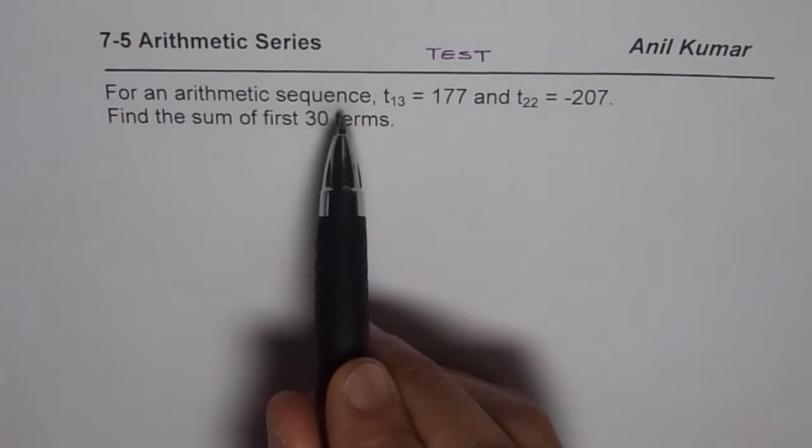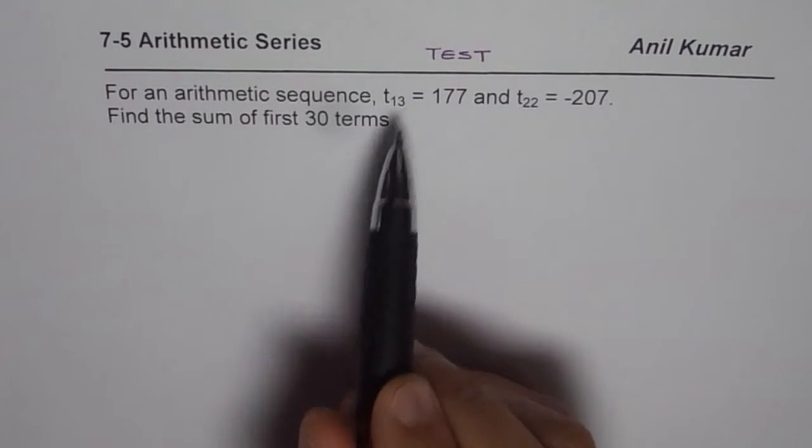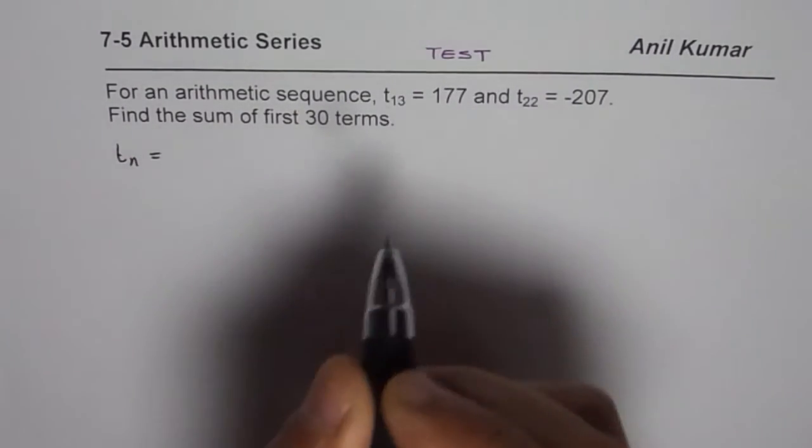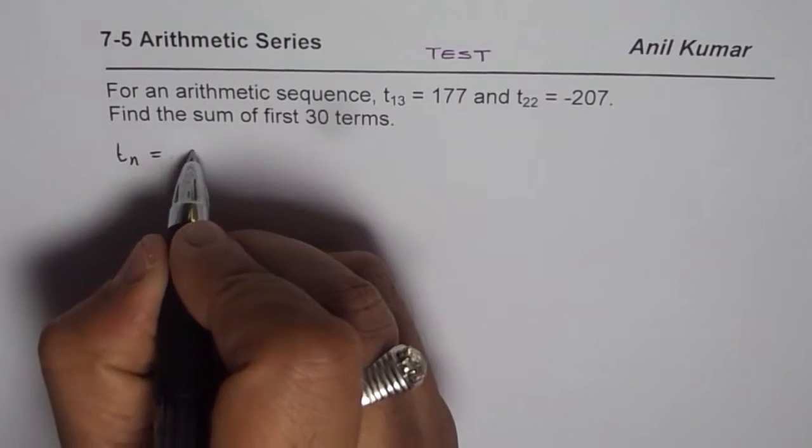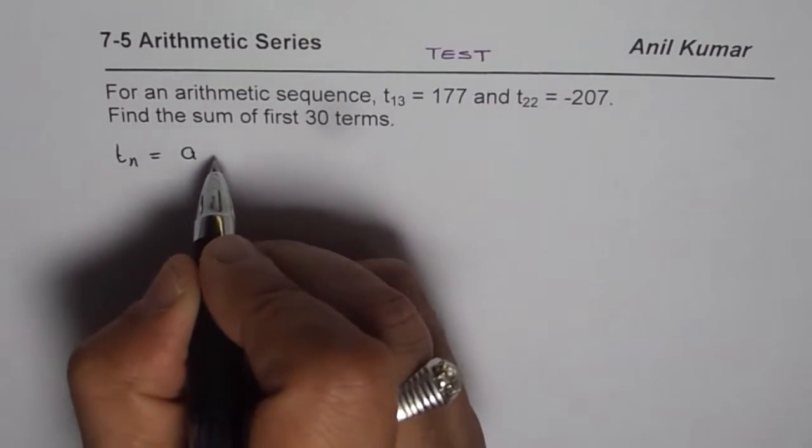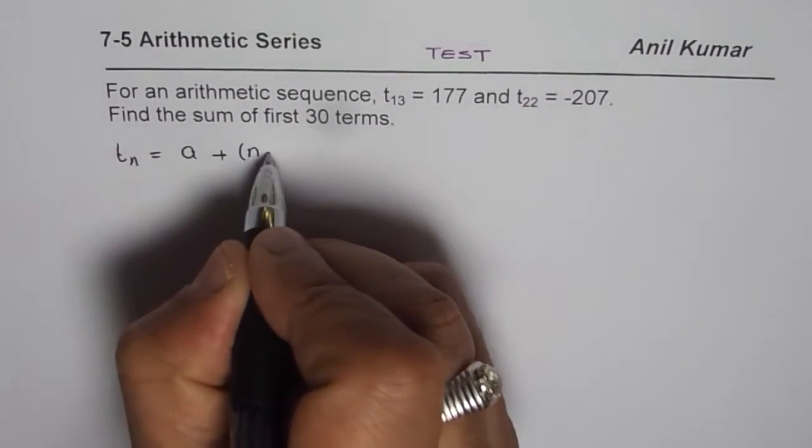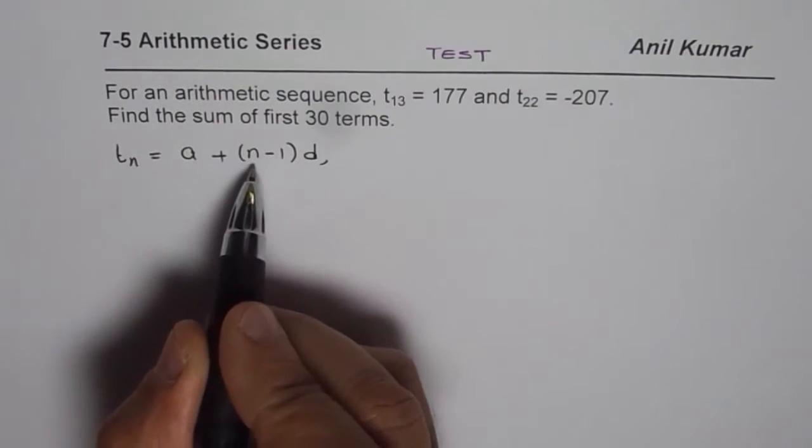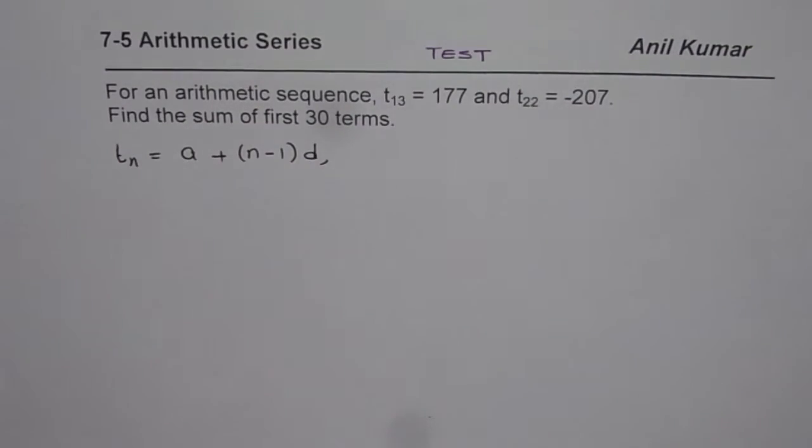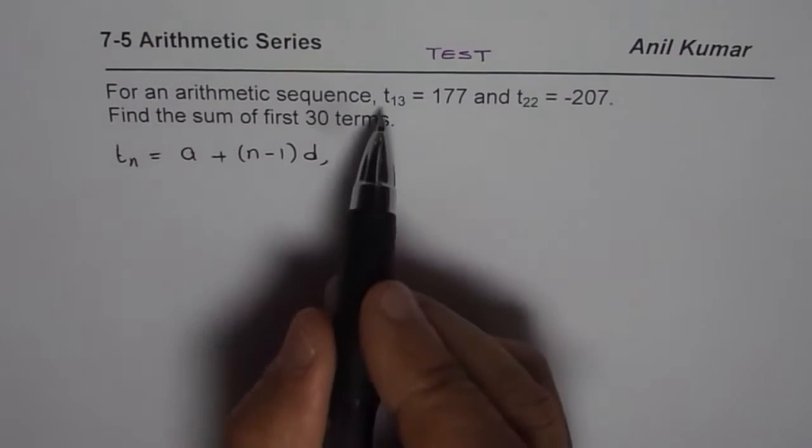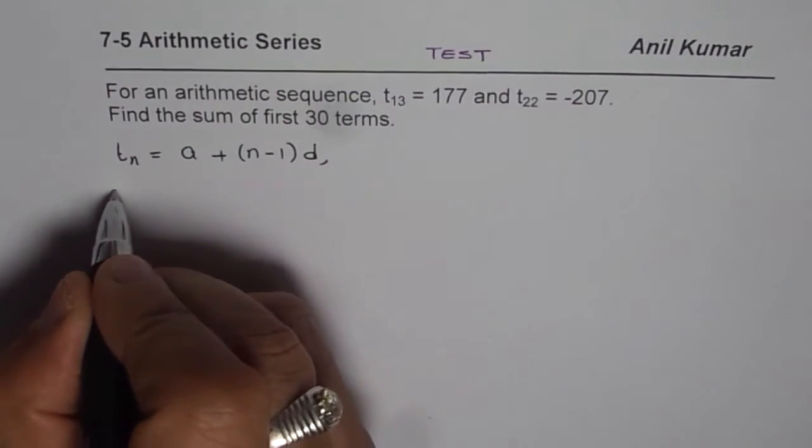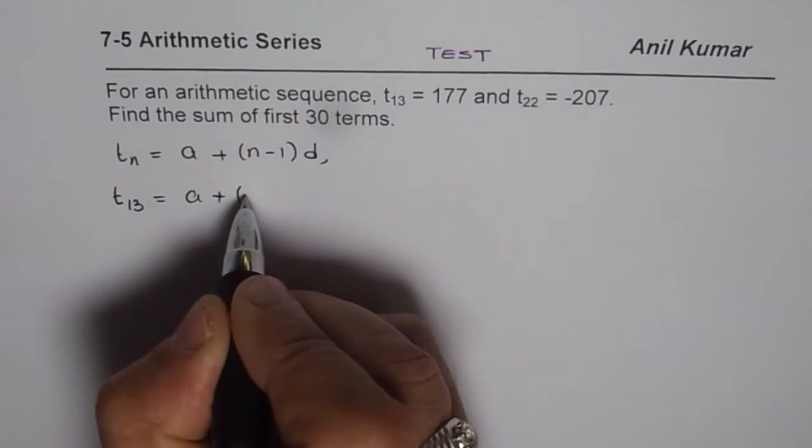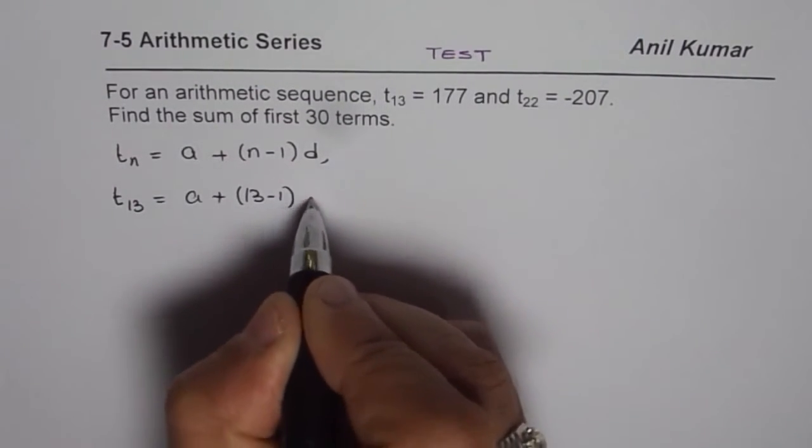Now when you have a question like this, we know these are terms of an arithmetic sequence, so we can apply the formula. The nth term formula is a + (n-1)d, where a is the first term and n is from natural numbers. We know t₁₃, so t₁₃ = a + (13-1)d.